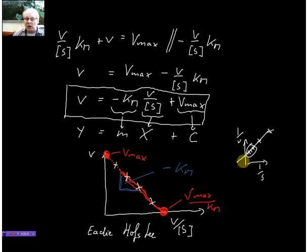Also for a Lineweaver-Burk plot, you have to very carefully design your plot area, because you go into this negative quadrant here, so this part here, and this one here gives you, for example, minus 1 over Km. And it is sometimes very tricky to read accurate values from a Lineweaver-Burk plot.